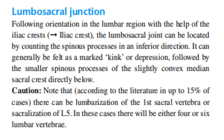Now, let's talk about the lumbosacral junction. Following orientation in the lumbar region with the help of the iliac crests, the lumbosacral joint can be located by counting the spinous processes in an inferior direction. It can generally be felt as a marked kink or depression, followed by the smaller spinous processes of the slightly convex median sacral crest directly below. Caution: note that according to the literature, in up to 15% of cases there can be lumbarization of the first sacral vertebra or sacralization of L5. In these cases, there will be either 4 or 6 lumbar vertebrae.